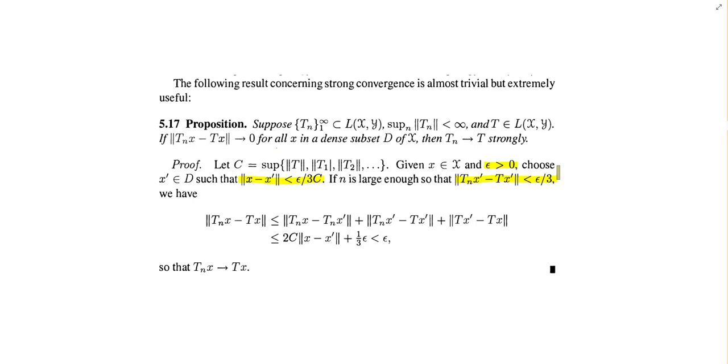Well, wherever it came from, at the very end, they want to approximate some difference. And they get that it's less than or equal to something that just magically ends up being less than epsilon. How did they do that?